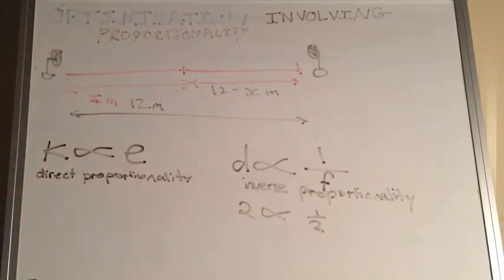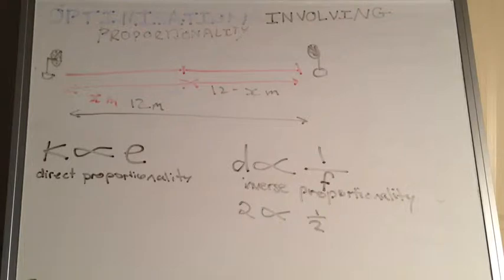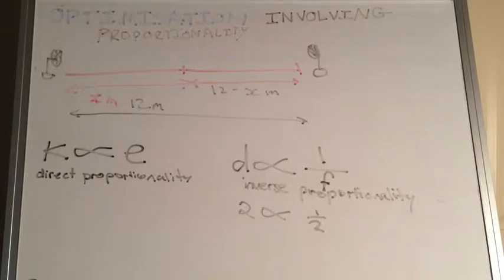So we've got the idea of direct and inverse proportionality. Now we're going to solve the problem on the board. The intensity of a light source at a distance is directly proportional to the square of the distance from the source. Two light sources — one twice as strong as the other — are 12 metres apart. At what point on the line segment joining the two sources is the intensity the weakest?